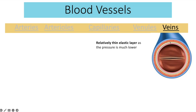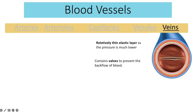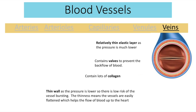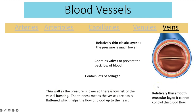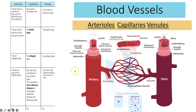The veins have all the same tissues as the artery but thinner. They have a relatively thin elastic layer because the pressure is much lower, so there doesn't need to be as much stretch and recoil. Veins contain valves — made of two flaps in the lumen — to prevent backflow of blood. They have lots of collagen for structural support, and thin walls since the lower pressure means a lower risk of bursting. The thin walls are also easily flattened, which helps blood flow back to the heart as skeletal muscles contract and squeeze the veins. The muscular layer is also relatively thin, meaning veins can't control blood flow.